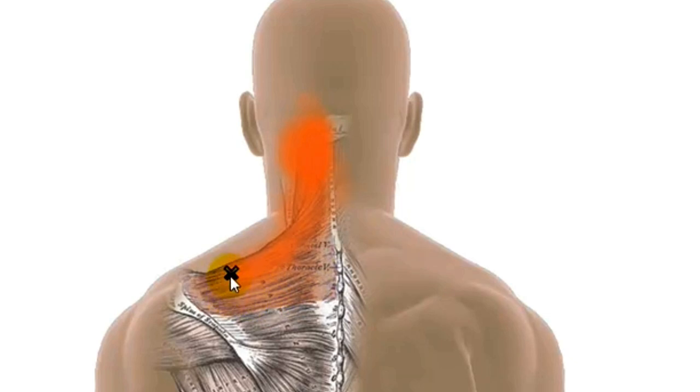When active, the pain starts where the trigger is and will refer across the trapezius, up the neck and end up in the base of the skull. The commonest place for the real concentration of the pain is the base of your skull.